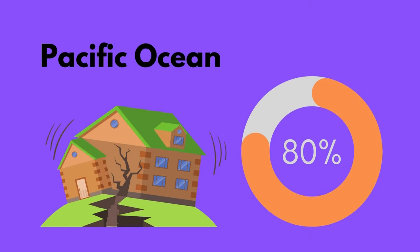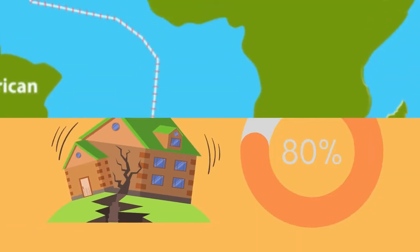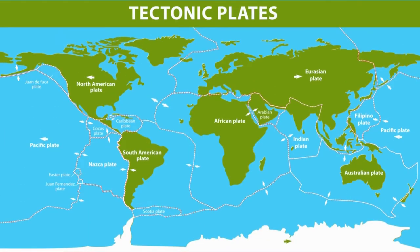80% of earthquakes occur in the Pacific Ocean. They are common at plate boundaries such as Japan and Taiwan, as they are located at the convergent plate boundary, which we call the Tectonic Plates.